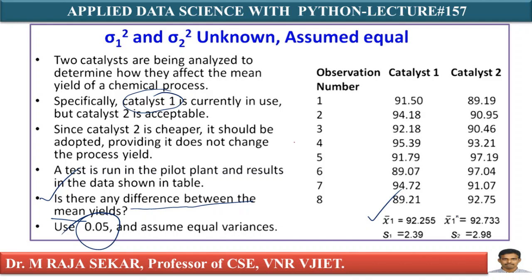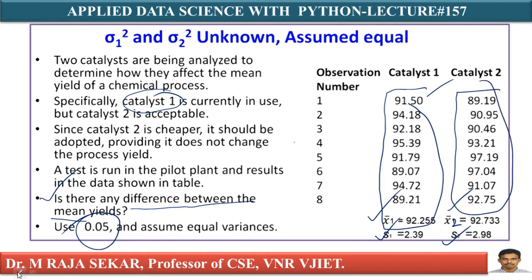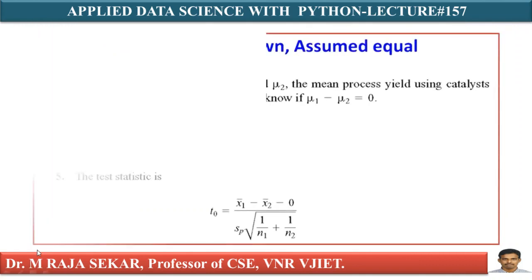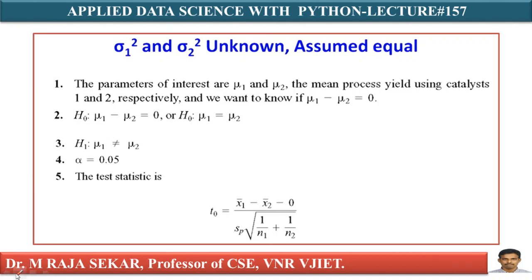The given data includes X1 bar (first sample mean), X2 bar (second sample mean), S1 (first sample standard deviation), and S2 (second sample standard deviation). There are eight observations for each catalyst. The null hypothesis is mu1 = mu2 (status quo: no difference), and the alternative hypothesis is mu1 ≠ mu2. Alpha is 0.05. The test statistic is T = (X1 bar − X2 bar − 0) / (SP × sqrt(1/N1 + 1/N2)).